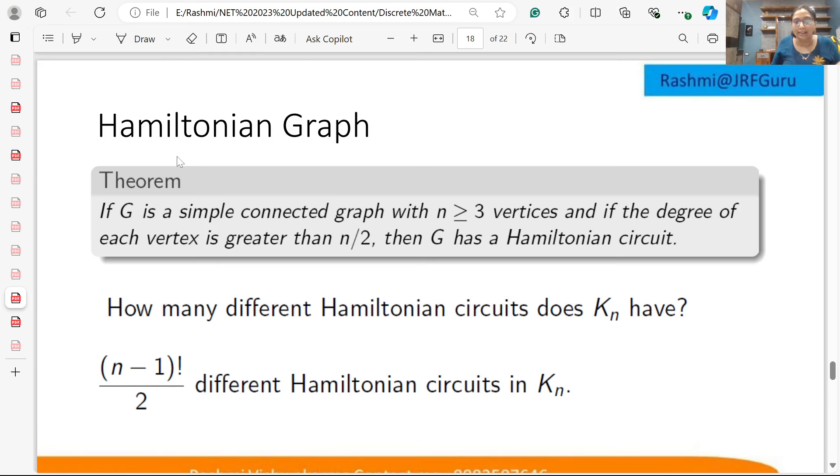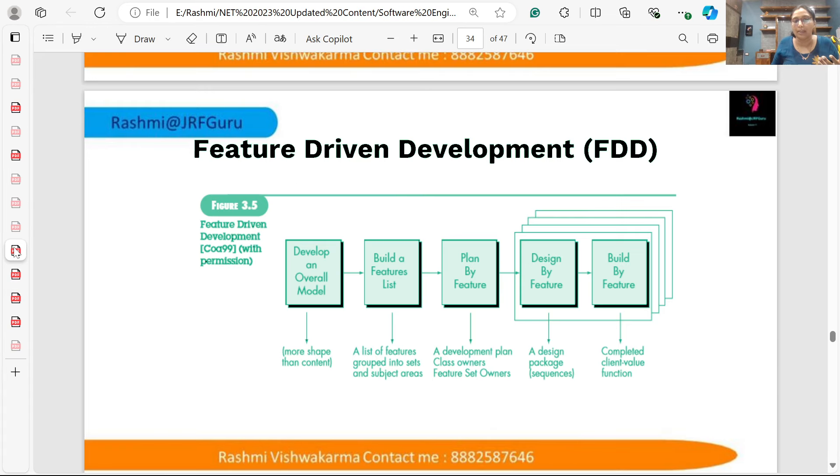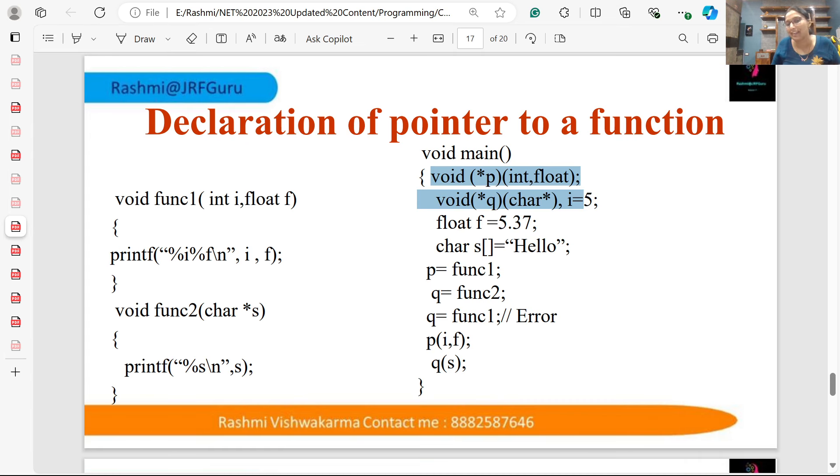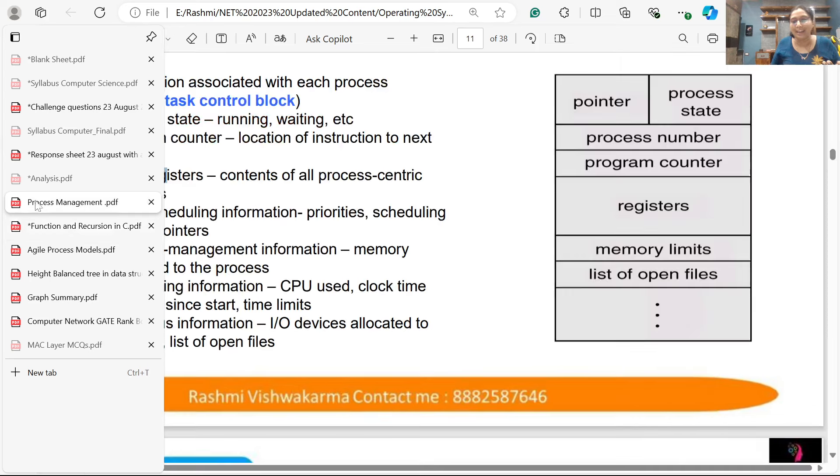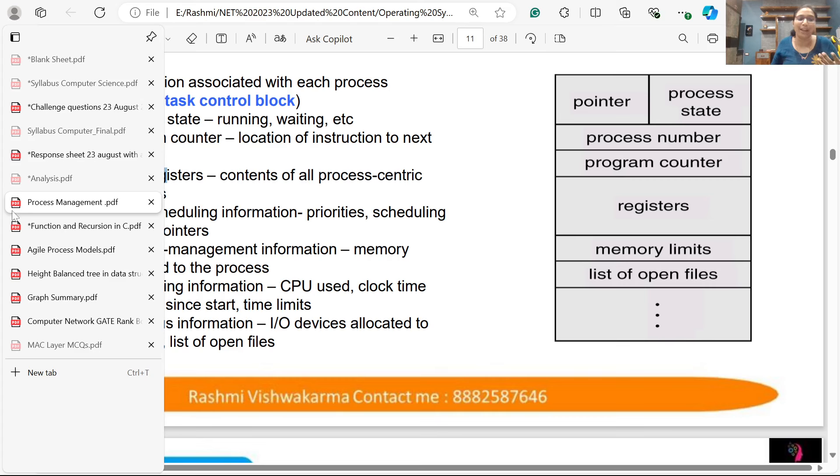The questions are from PYQ sets. I have questions on Hamilton graphs, red-black trees, feature-driven development in software engineering, function declaration—how do you declare a pointer to a function? This type of question was directly asked. Process control block—what information is in the process control block? I have put it in the PPT.